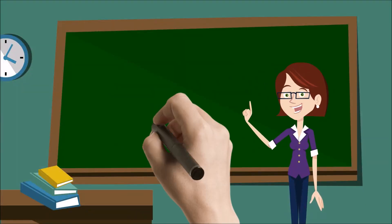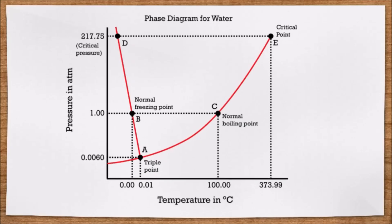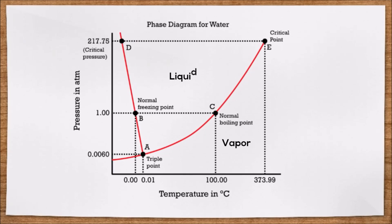To understand this, let's look at the phase diagram of water. This diagram shows the state of matter in which the water is found depending on the pressure and the temperature.